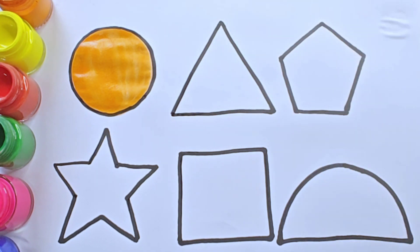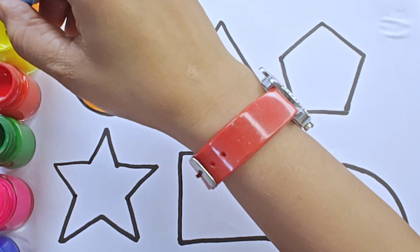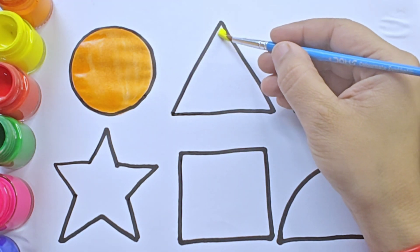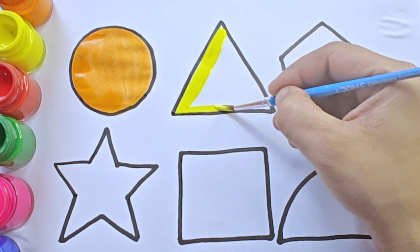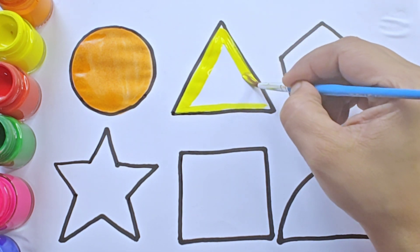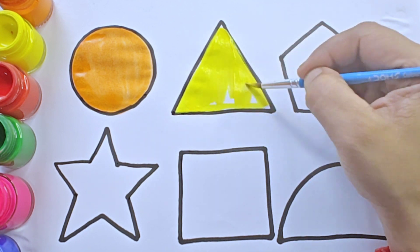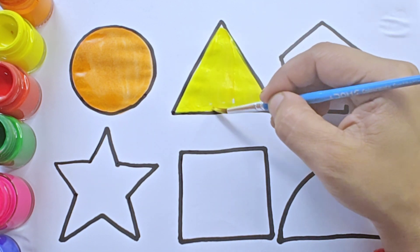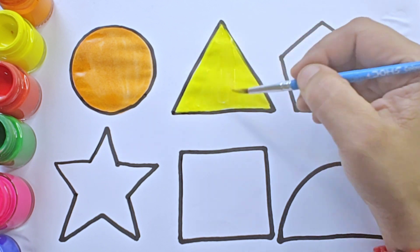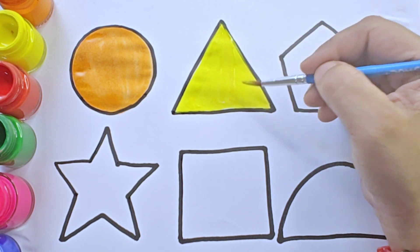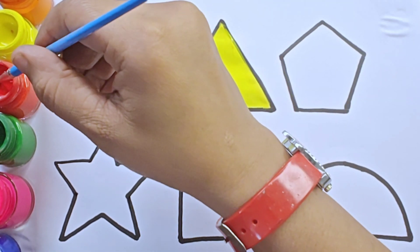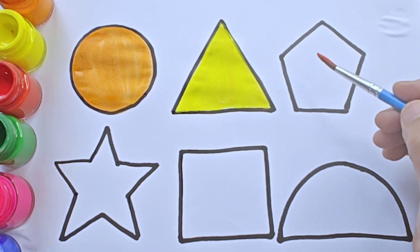It is circle. It is yellow color. It is red color. It is equilateral triangle. It is yellow color.